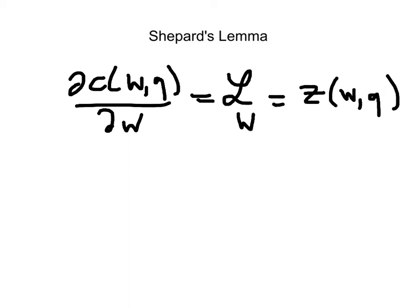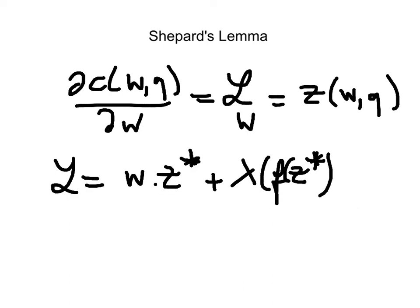We can see this by writing out the Lagrangian here for the cost minimization problem. The Lagrangian is the cost of the optimal input, as given by the conditional factor demand. When we take the partial derivative of the Lagrangian with respect to W, everything drops out except for Z*, which is the optimal input vector that minimizes the cost to produce Q units of output.